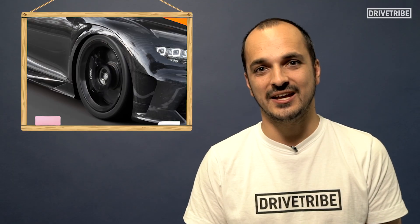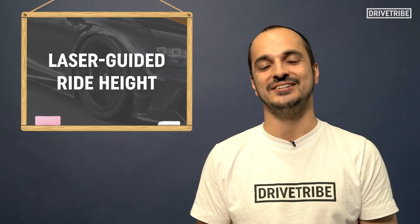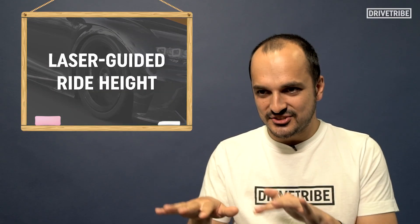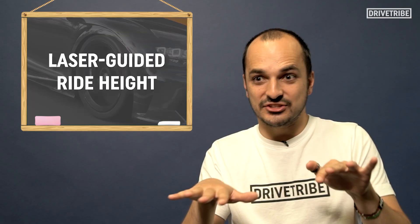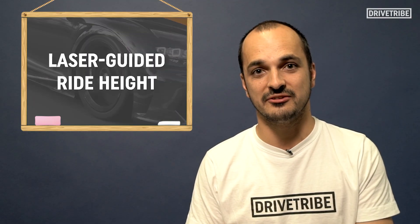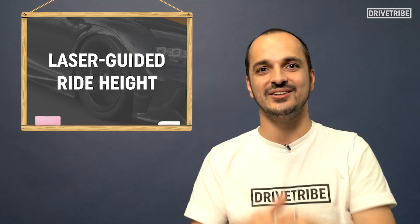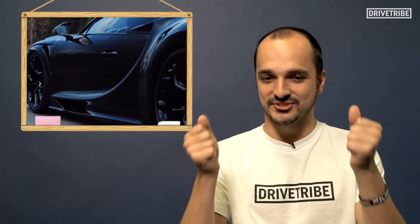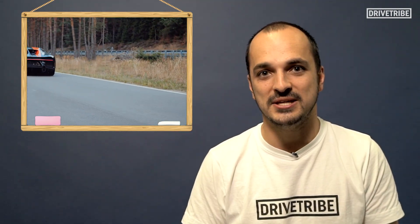Along with the tires keeping the car stable, Bugatti also came up with a technology called laser guided ride height. That's a system that scans the road ahead and adjusts the suspension to cope with any discrepancies with the road surface to keep the car bang level, so that Andy Wallace could just keep his foot pinned and sail on to that top speed.